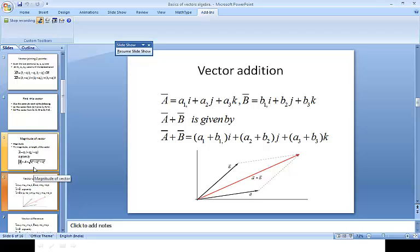If vector A is a1i + a2j + a3k and vector B is b1i + b2j + b3k, then A + B is given by (a1 + b1)i + (a2 + b2)j + (a3 + b3)k.